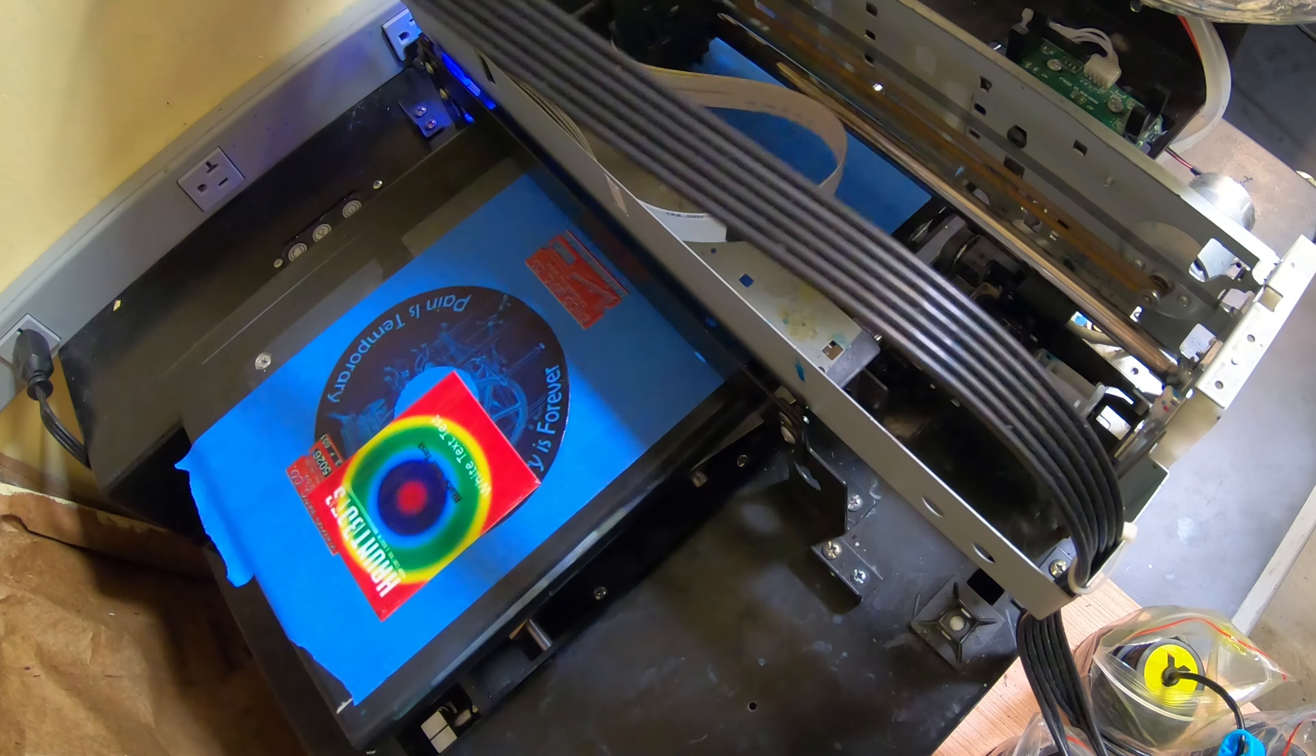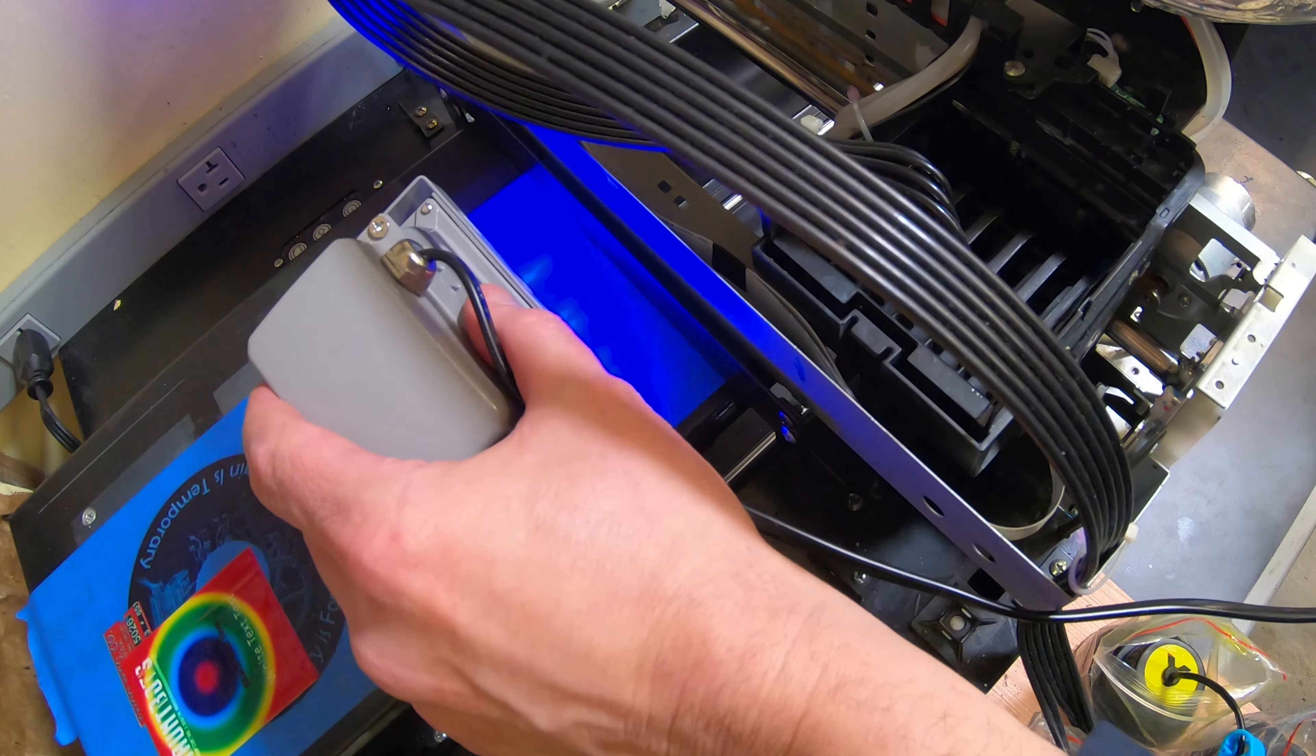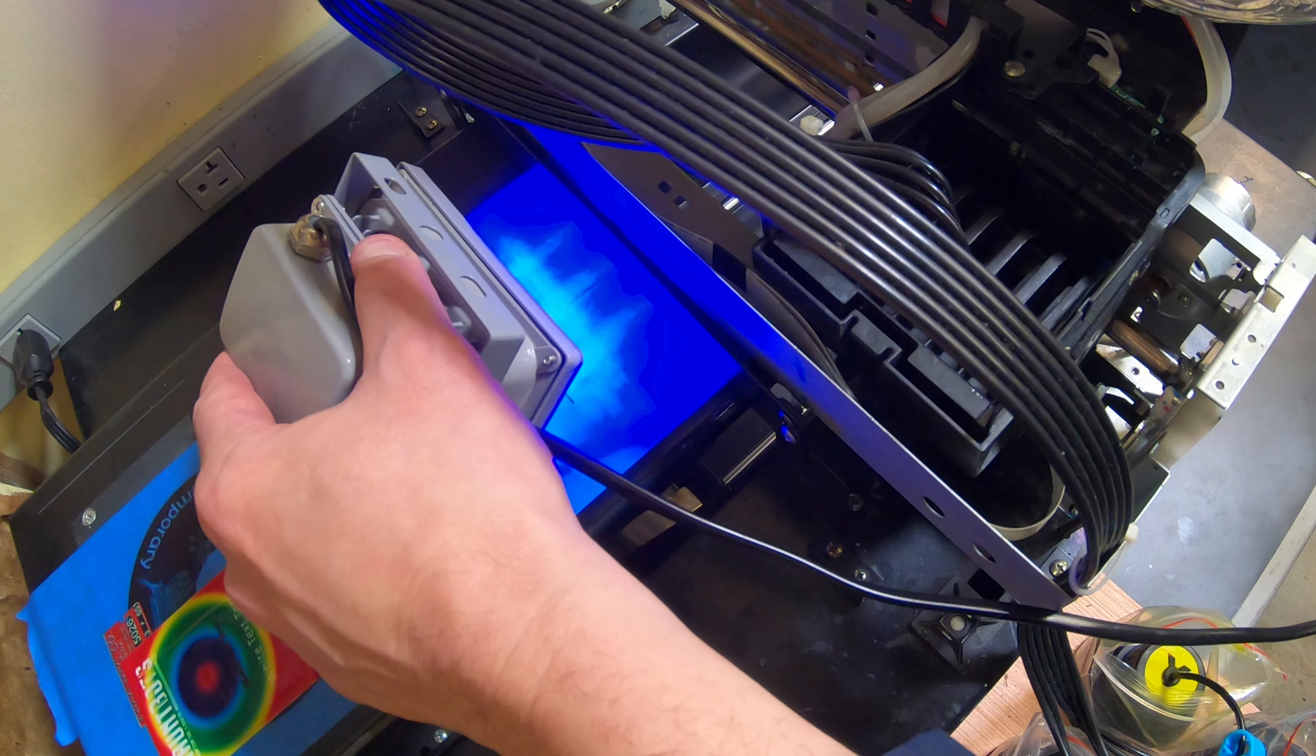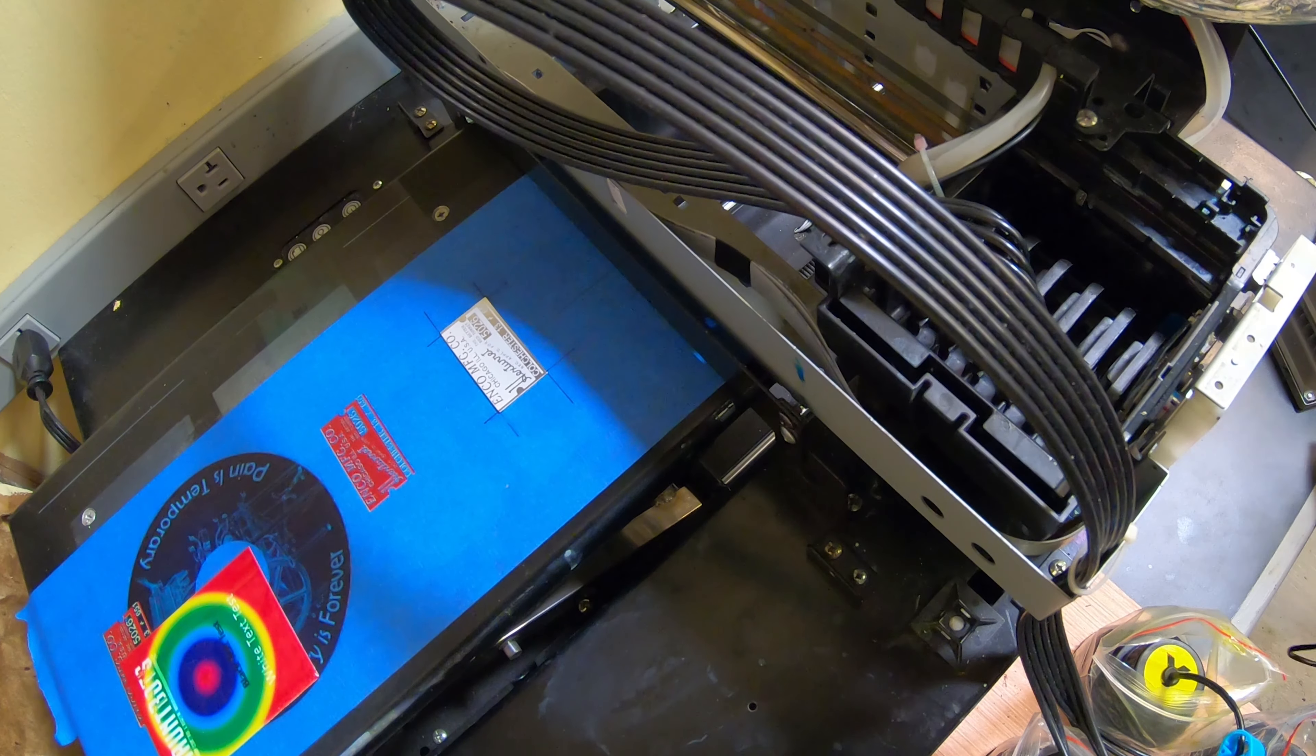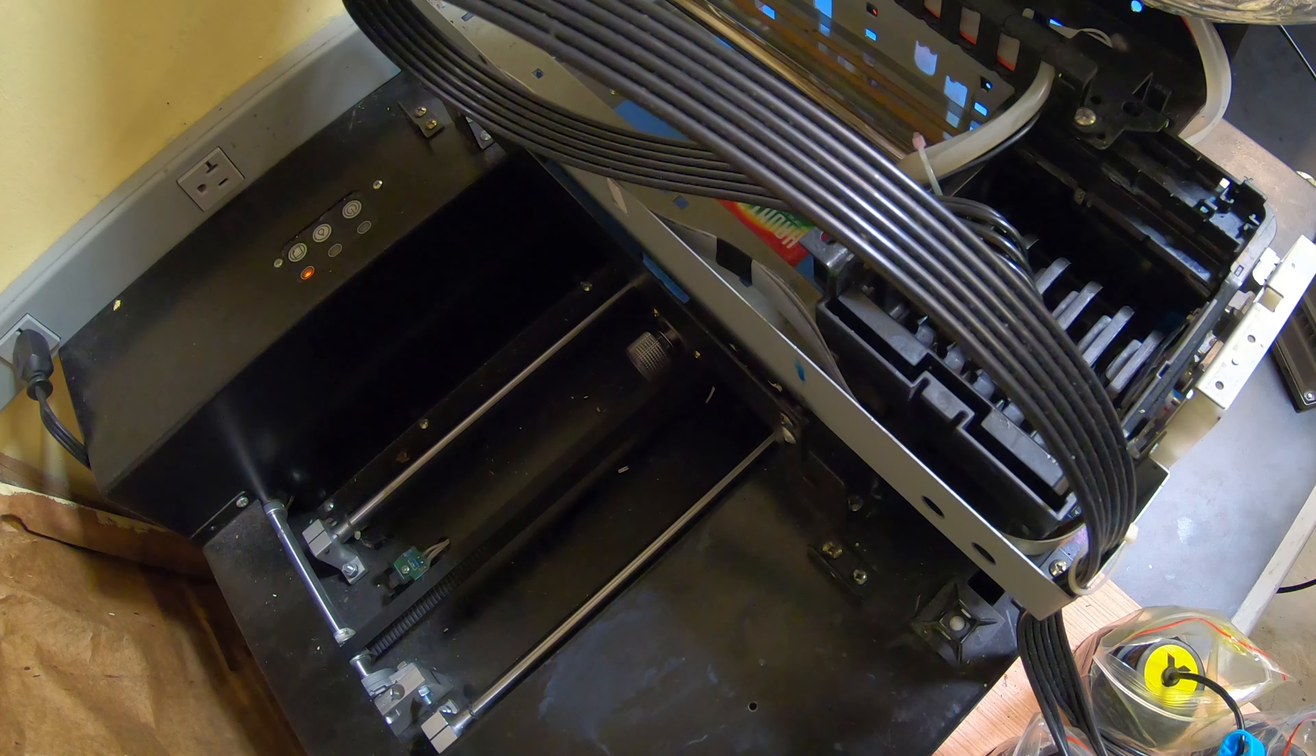This particular printer was never sold in the US. It was intended for the European market, so it's an A4 paper size. Now my UV curing light is starting to wear out just a little bit. This printer is about four years old, so I always go ahead and hit it with some extra UV just to ensure that it cures. Now this is a two-pass printer. It prints first the white ink, and then you pull back the bed and start it again.